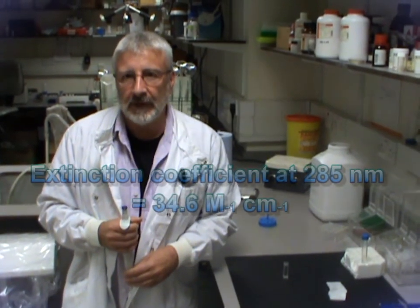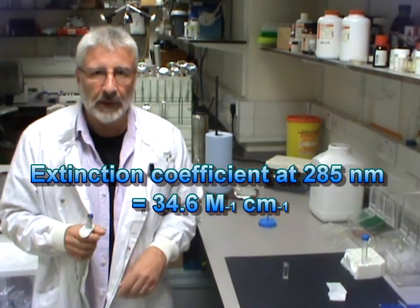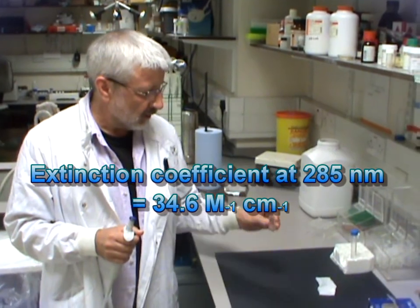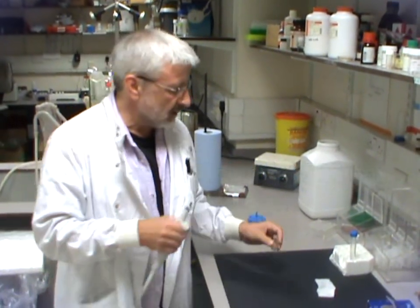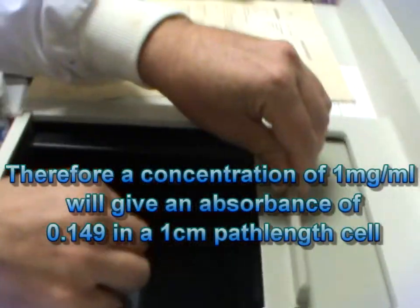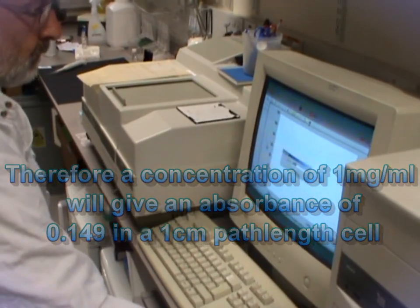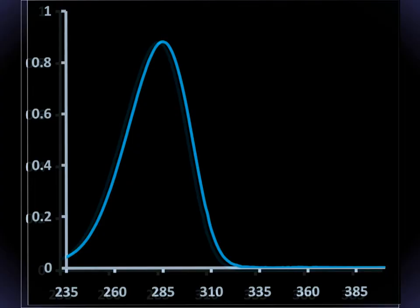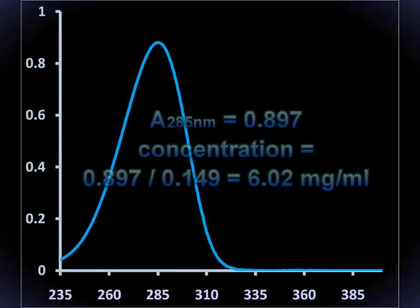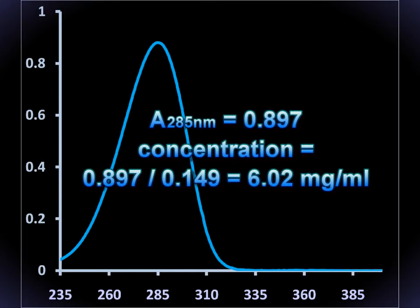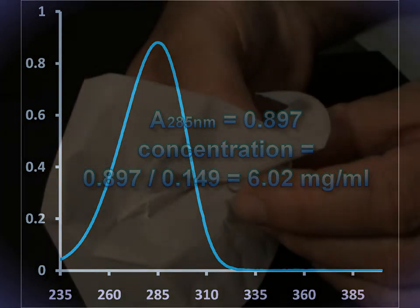We calculate the concentration from the absorbance at 285 nanometres. I've already taken a baseline so I'll load this 1 cm³ cuvette with CSA. The absorbance at 285 nanometres is 0.897 and this gives a concentration of 6.02 mg per ml.